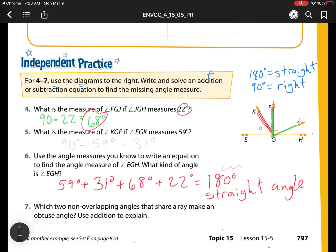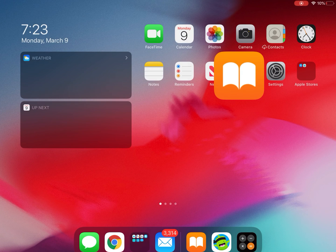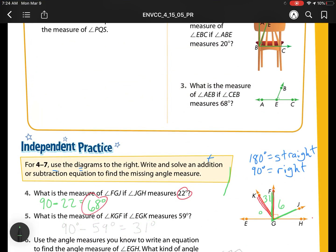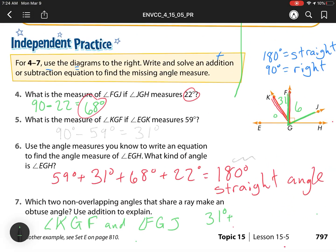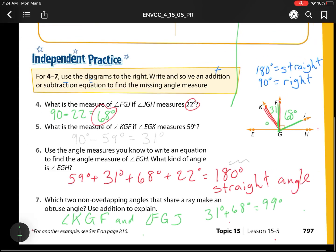And what does it say? It says use addition to explain. Here we have 31 degrees, because remember this was 31, plus what was this one? That was 68 degrees. So if we add those together, what do we get? We get 99 degrees, which is bigger than 90. So that makes sense of obtuse angle. Heading on to our next page.